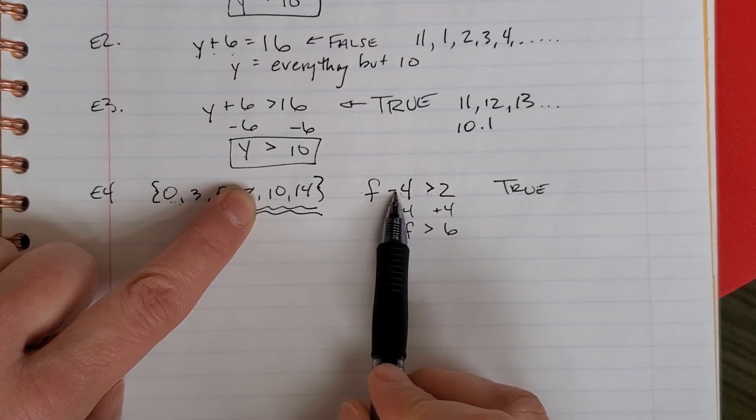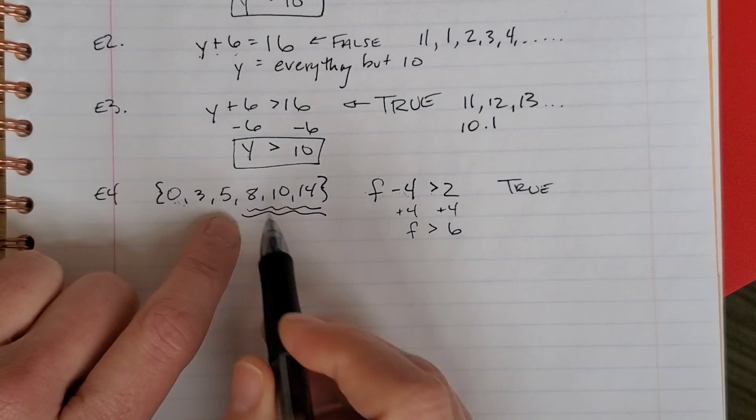10 minus 4 is 6. 6 greater than 2? Yes. 14 minus 4 is 10, and 10 is greater than 2. So yes, in fact, these numbers right here satisfy that equation or inequality.